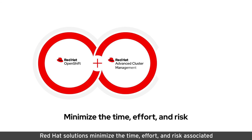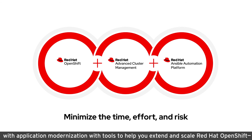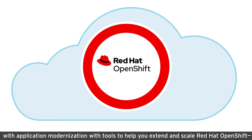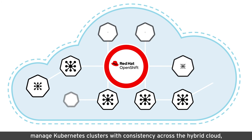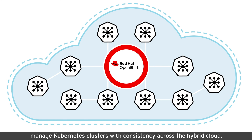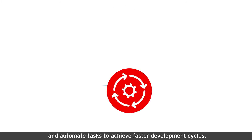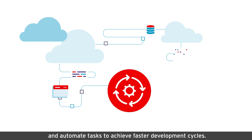Red Hat solutions minimize the time, effort, and risk associated with application modernization with tools to help you extend and scale Red Hat OpenShift, a powerful enterprise Kubernetes platform, manage Kubernetes clusters with consistency across the hybrid cloud, and automate tasks to achieve faster development cycles.